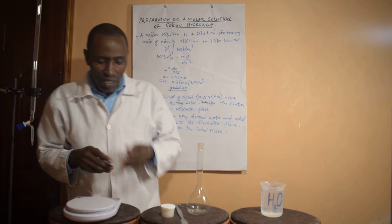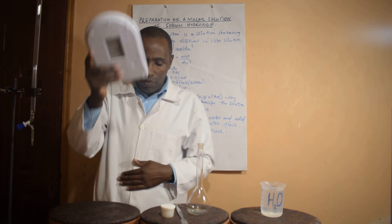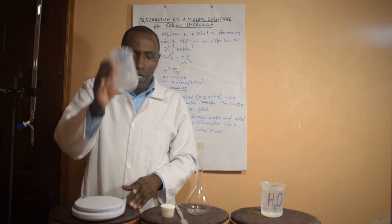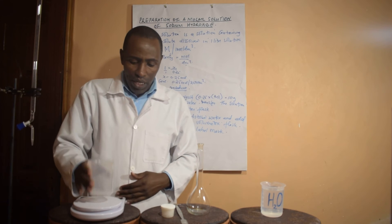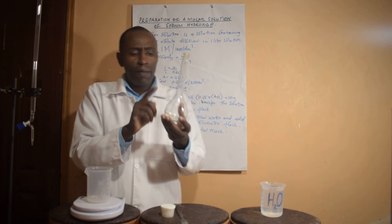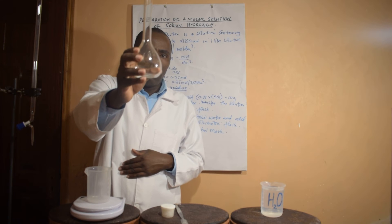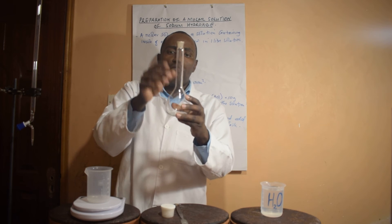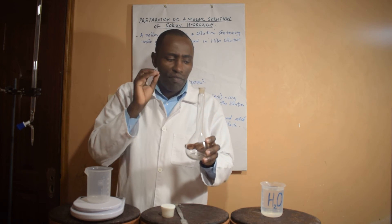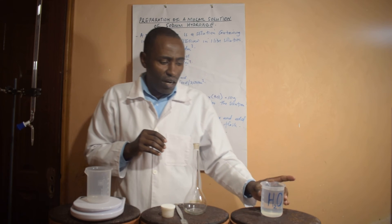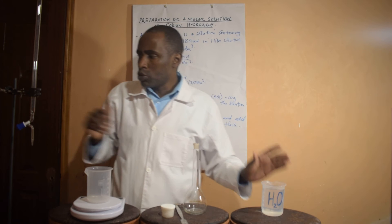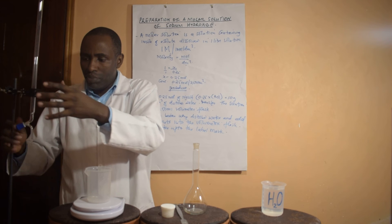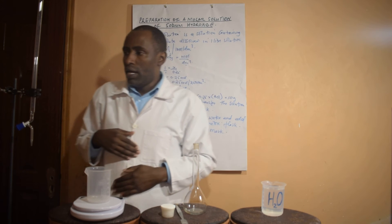Let me take you through the apparatus we are going to use. I'm going to have a weighing balance to weigh the sodium hydroxide. I'll also use a beaker. A very important piece of apparatus is the volumetric flask, used for accurate measurement of volumes — in this case we require very high accuracy. I'll also have distilled water and a burette with a stand.